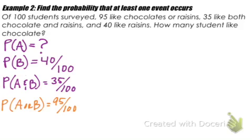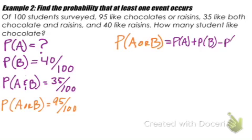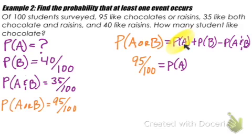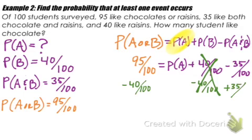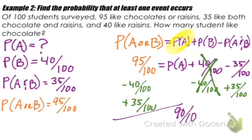We need to figure out how many people like chocolate only. Using the addition rule, we work backwards and substitute the information we know. We know 95 out of 100 people like chocolate or raisins. That equals the probability we're trying to find — chocolate only — plus raisins (40/100), minus both (35/100). We subtract 40/100 from both sides, add 35/100 to both sides, combine like terms, and simplify. We get the probability of people liking chocolate: 90 out of 100, so 90 students like chocolate.